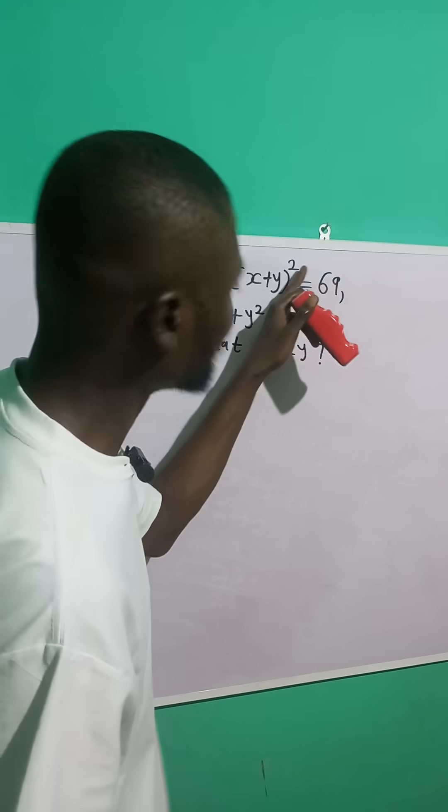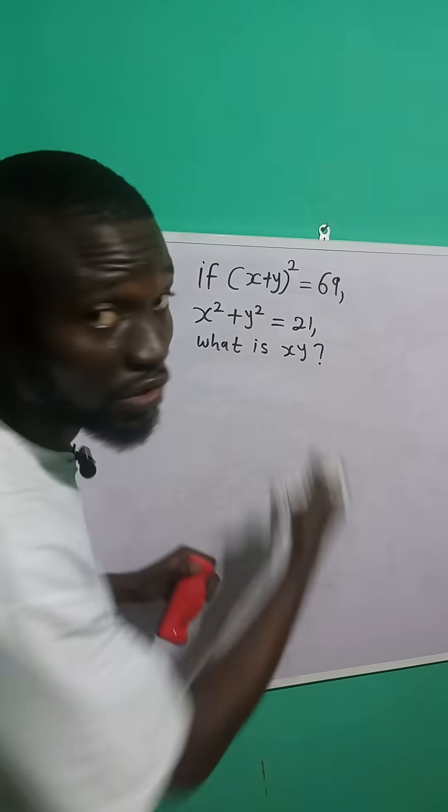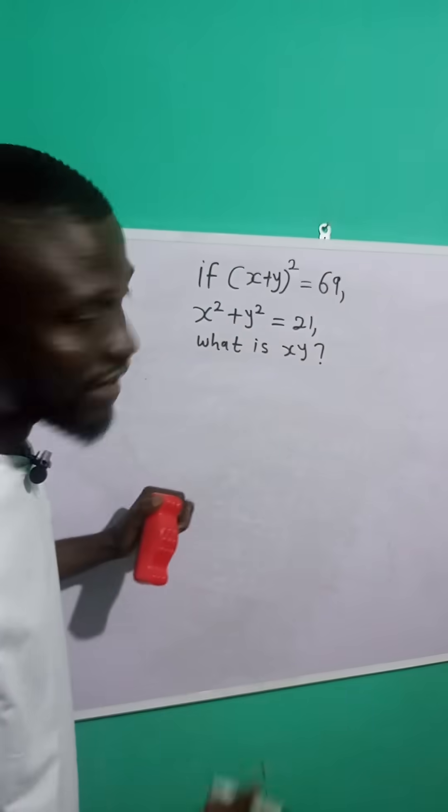If x plus y raised to the power of 2 is equal to 69, and x squared plus y squared is equal to 21, what is xy?